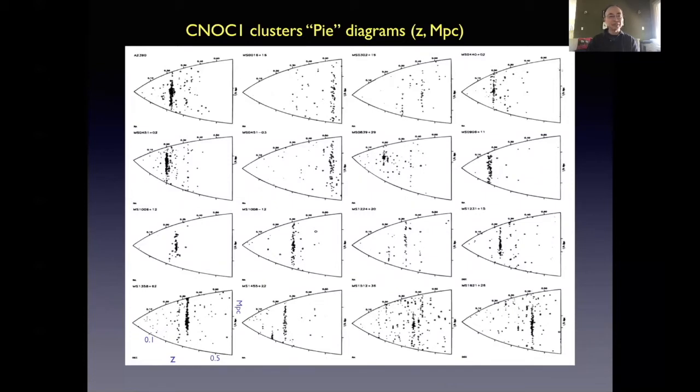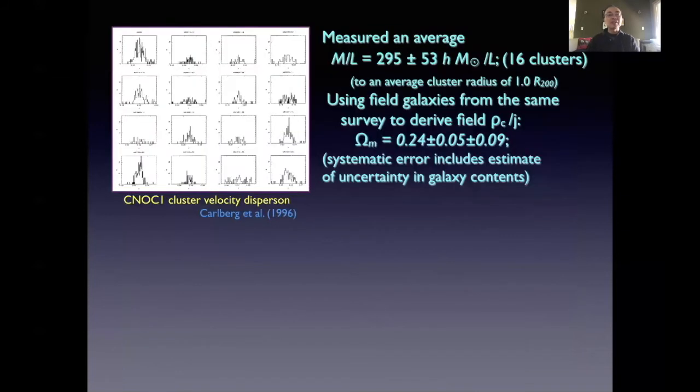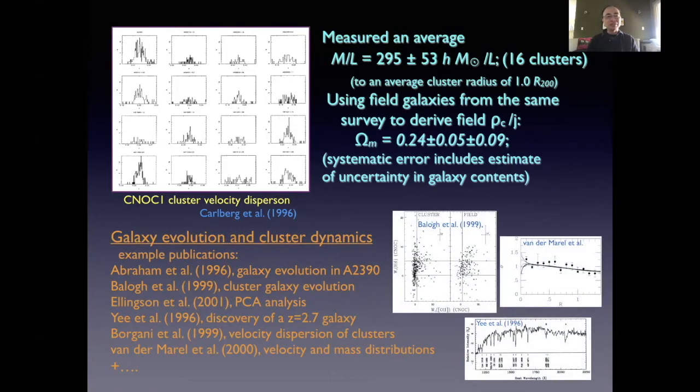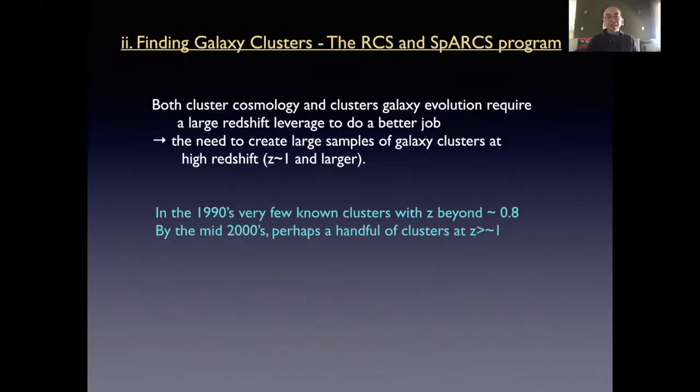The main result from this is the determination of the mass-to-light ratio of the clusters using primarily velocity dispersion and dynamics of galaxies in the cluster. We came up with a mass-to-light ratio of about 295, producing Omega M of 0.24. So basically, even when we go out to much larger radius, we produce essentially similar Omega M as other studies. This Omega M is also consistent with the current day Lambda CDM model. The project produced a large number of papers on galaxy evolution and galaxy cluster dynamics, which we don't have time to go into. And around that time, about late 1990s, we started realizing that both cluster cosmology and cluster galaxy evolution require a large redshift leverage if you want to do a good job.